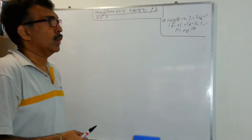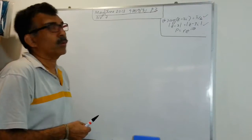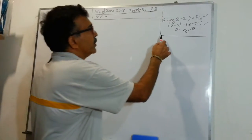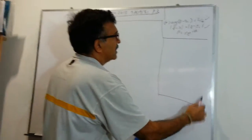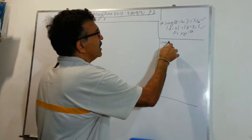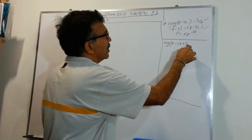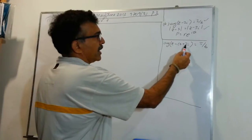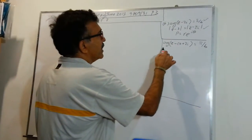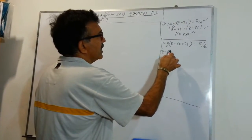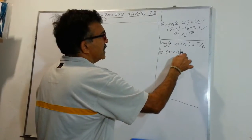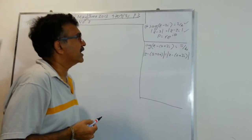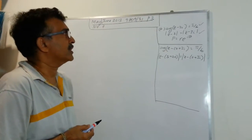This problem involves loci — things we would have learned when we studied the locus of complex numbers. To help us with the problem, first rewrite the expressions. Argument of z minus (0 + 2i) equals pi over 6. And then we have mod of z minus (3 + 0i) equals mod of z minus (0 + 3i). Now we are good to go — I've just rewritten the loci that they have given to us.